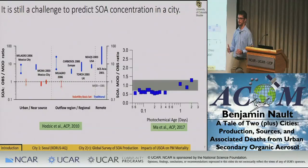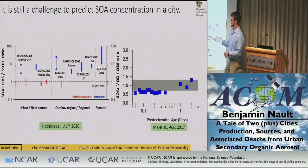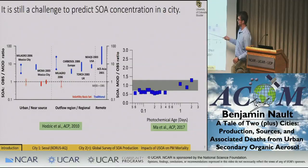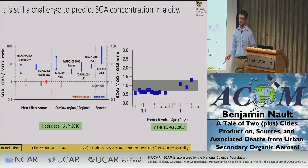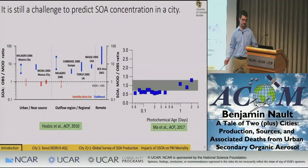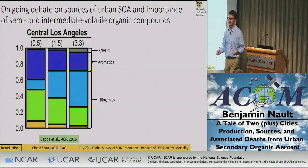Seven years later, we're still only getting within a factor of two of observations. There's still a lot of uncertainty on the production and sources of secondary organic aerosol. A big reason is the debate about the main gas-phase precursors of SOA. Chris Kappa's 2016 paper looked at different assumptions about VOC loss to Teflon walls to calculate SOA yields, and found that most of the SOA was coming from biogenics with a small fraction from aromatics and negligible amounts from semi- and intermediate-volatile organic compounds.